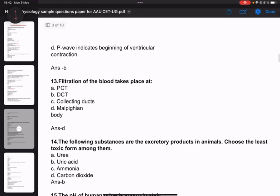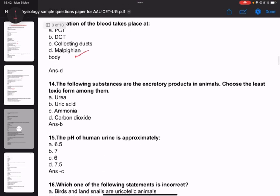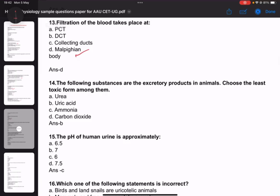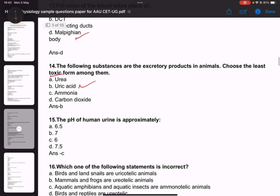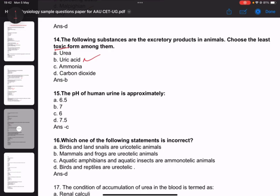Question thirteen: Filtration of blood takes place in the Malpighian body. Question fourteen: The least toxic nitrogenous waste is uric acid. Questions about the urinary system - PS or parasympathetic nervous system.